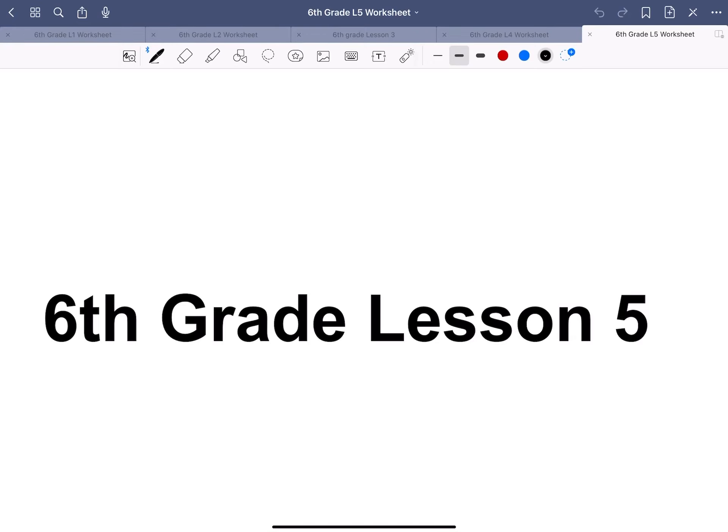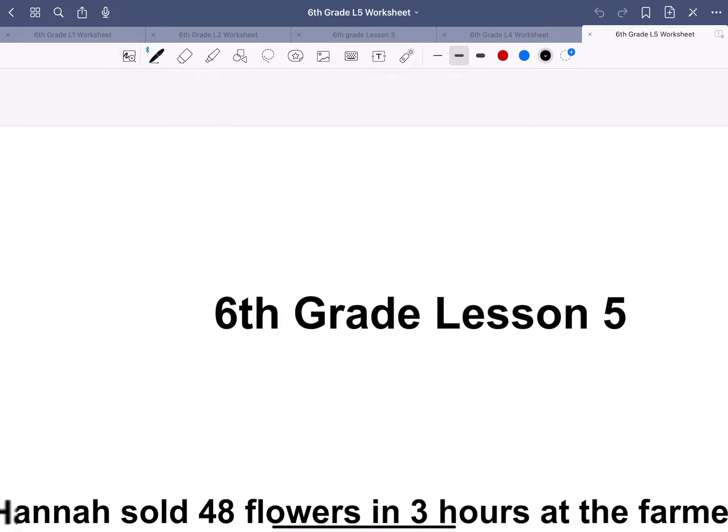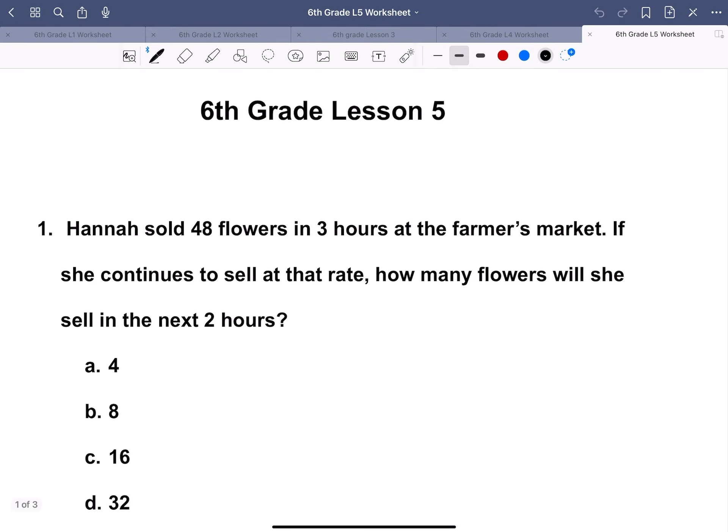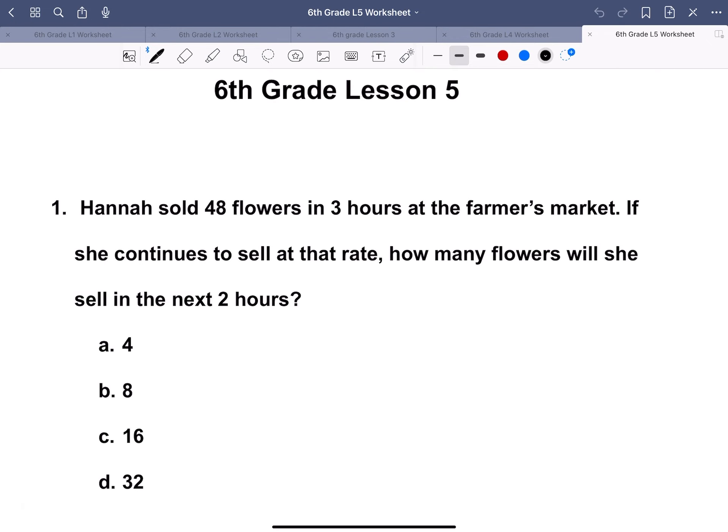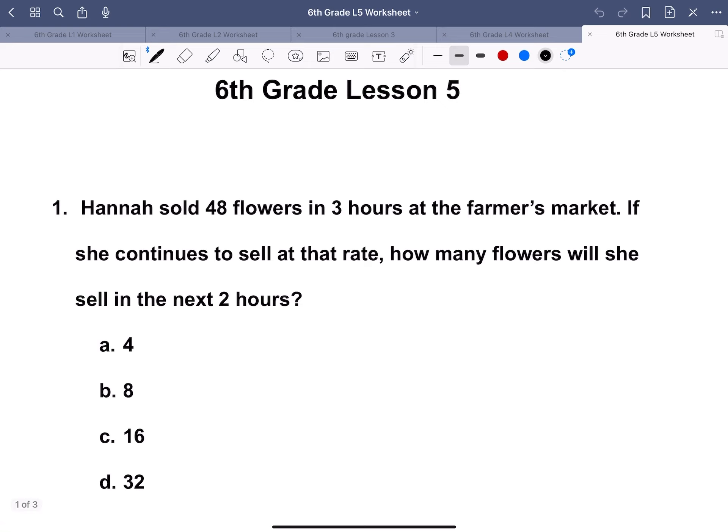Hello everyone, so today we will be looking at sixth grade lesson five. To begin, we have number one here. Hannah sold 48 flowers in three hours at the farmers market. If she continues to sell at that rate, how many flowers will she sell in the next two hours? We know that we can tell how many flowers she's going to have in each hour. So you get 48 over 3 to get the rate of how many flowers she gets every hour, which is 16.